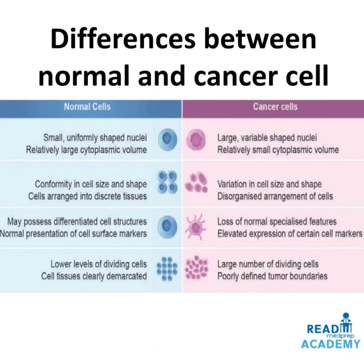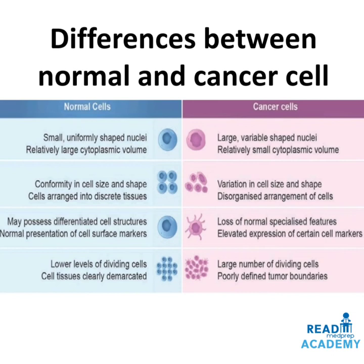Comparing normal cells and cancer cells: normal cells have small, uniformly shaped nuclei and relatively large cytoplasmic volume, whereas cancer cells have large, variable-shaped nuclei and relatively small cytoplasmic volume. Normal cells show conformity in size and shape and are arranged in discrete tissues, whereas cancer cells show variation in size and shape with disorganized arrangement. Normal cells possess differentiated structures and normal cell surface markers, whereas cancer cells show loss of normal specialized features and elevated expression of certain cell markers. Normal cells have lower levels of dividing cells with clearly demarcated boundaries, whereas cancer cells have large numbers of dividing cells with poorly defined tumor boundaries.